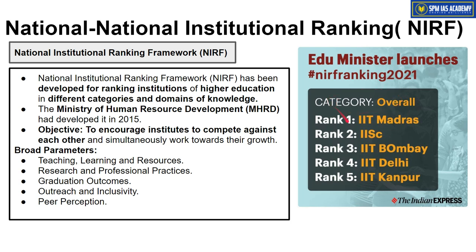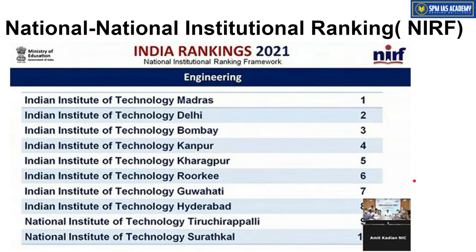The Education Ministry has published the 2021 National Institutional Ranking Framework. In the overall category, IIT Madras has been given rank 1, IISc is second, IIT Bombay third, IIT Delhi fourth, and IIT Kanpur fifth. In engineering colleges, the top 7 positions are all held by IITs — IIT Madras, IIT Delhi, IIT Bombay, IIT Kanpur, IIT Kharagpur, IIT Roorkee, and IIT Guwahati.